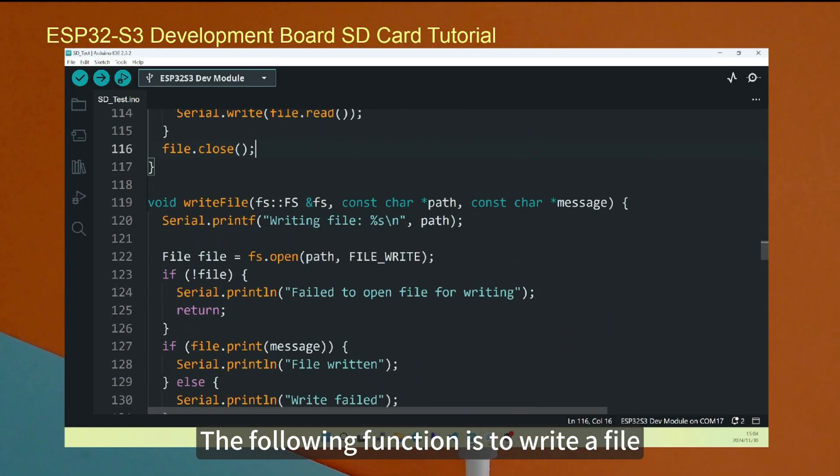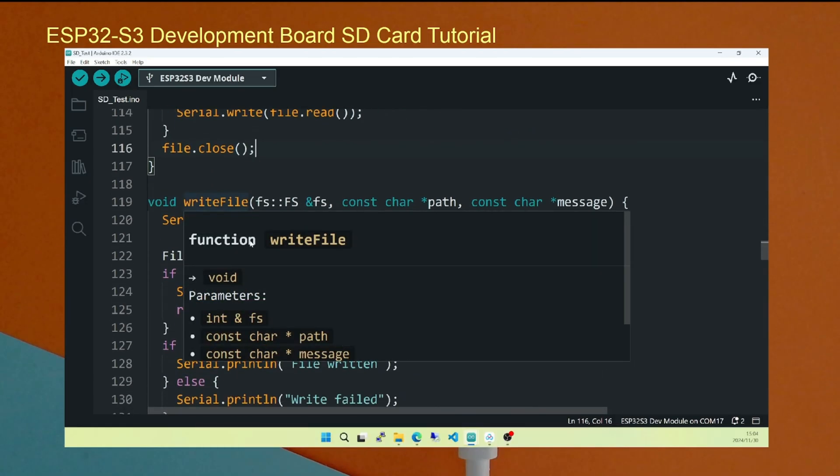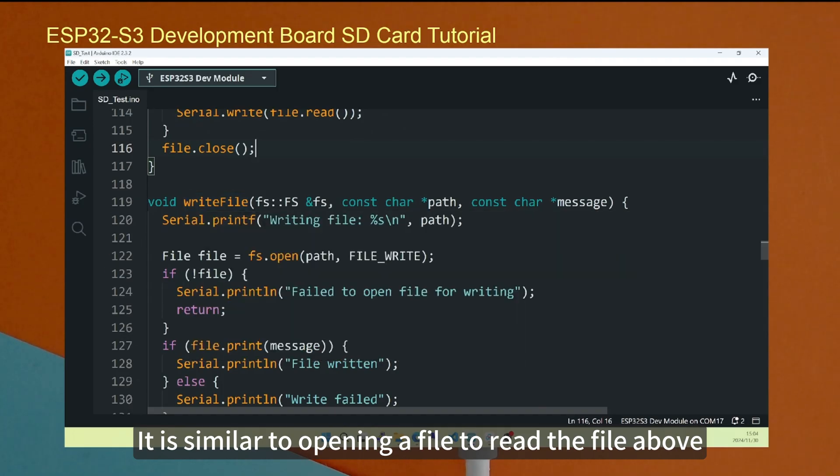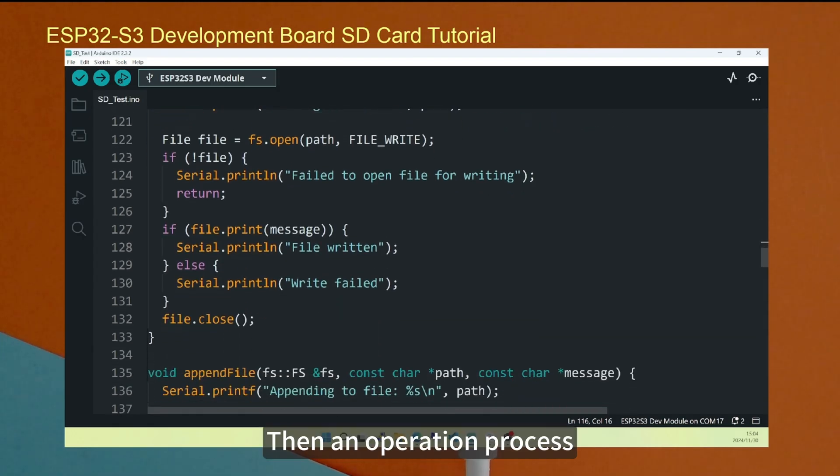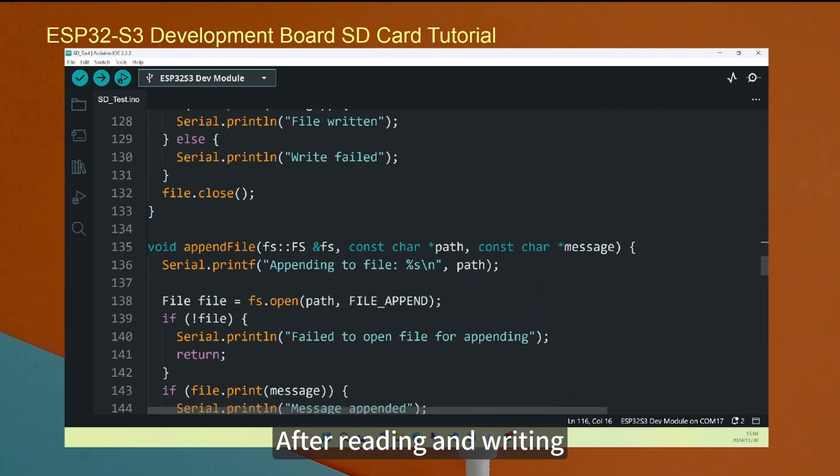The following function is to write a file. It is similar to opening a file to read the file above. Open the file, including the files written in this. Open the file for writing, then an operation process. Finally close the file. After reading and writing.